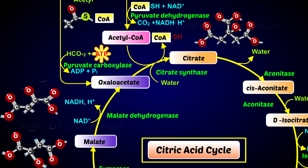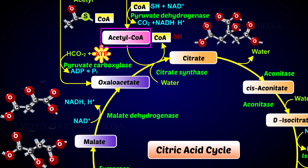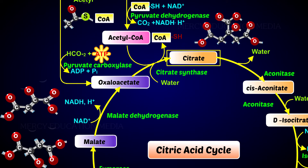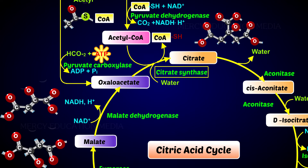In the first reaction of the citric acid cycle, one molecule of acetyl coenzyme combines with oxaloacetic acid to form citric acid. This reaction is catalyzed by citric acid synthetase. Citric acid contains three carboxylic acid groups.